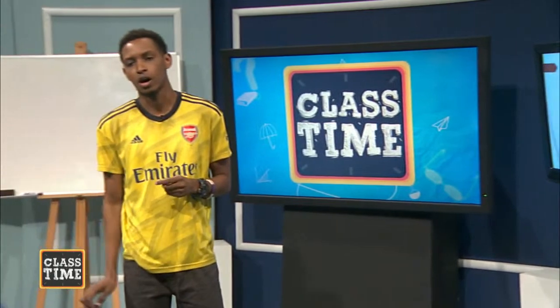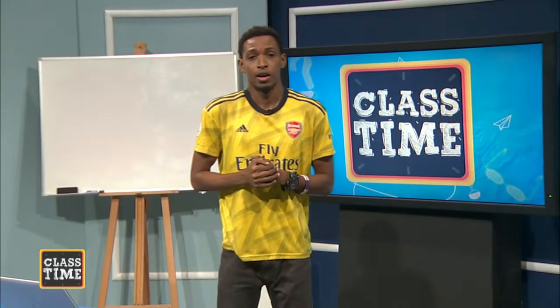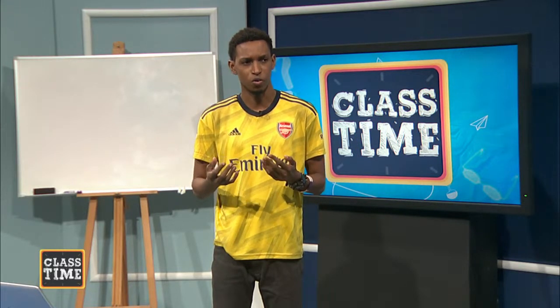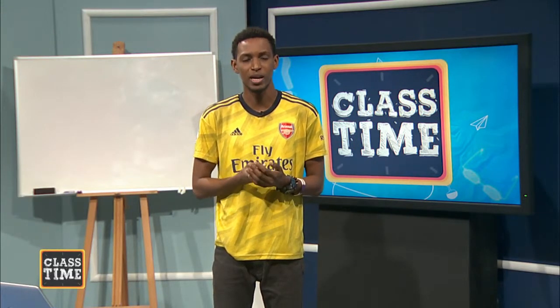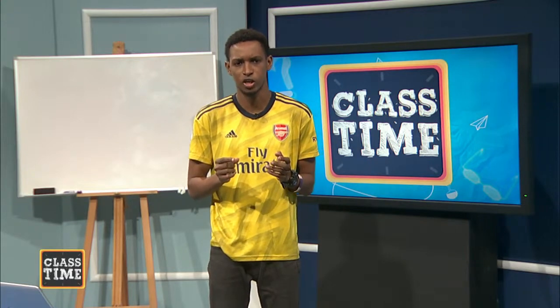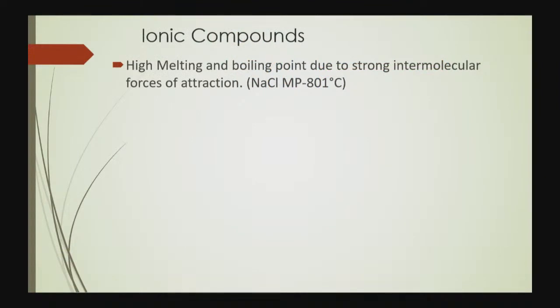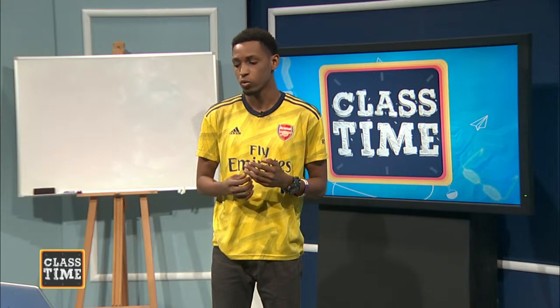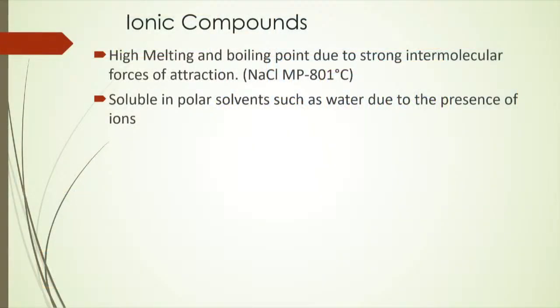Let's look at some characteristics of ionic compounds. These ionic compounds tend to exist in three-dimensional lattice structures, which are pretty rigid and hard to break down. So generally, ionic compounds tend to have high melting and boiling points. To melt something essentially means to separate the particles from each other. Since an ionic compound exists in a very stable ionic lattice with strong intermolecular forces of attraction, we would have to break down that lattice structure to melt it, which is very hard. The melting point of sodium chloride, for example, is 801 degrees Celsius.